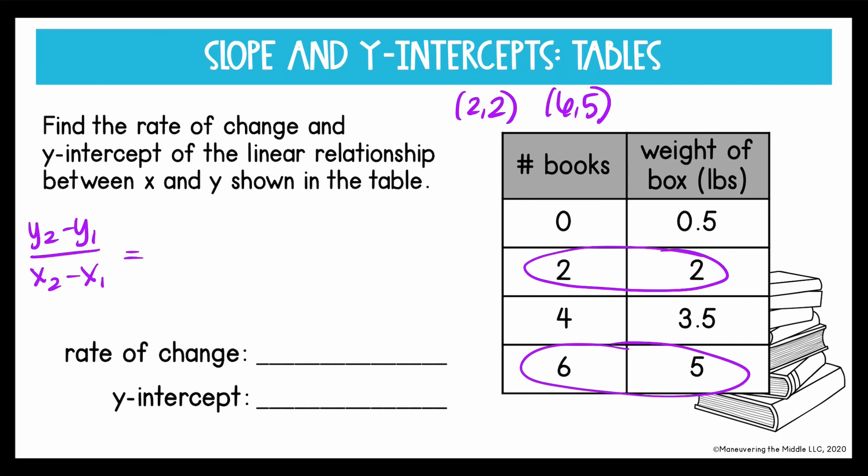So for y2 minus y1, I will subtract the y values in the ordered pairs. 5 minus 2, and then x minus x, 6 minus 2. So simplify by subtracting, and I get 3 over 4. Or we could write that as a decimal, 75 hundredths. And it's a rate of change. We're given units here. So look at your categories for your x and your y. So that's going to be pounds per book, 0.75 pounds per book.